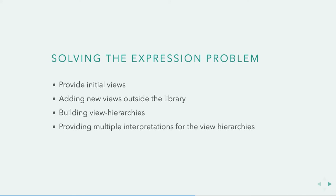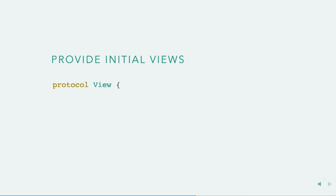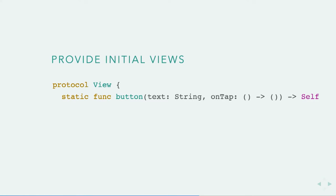In order to convince you that I have a solution, I'm going to show you how to provide the initial views inside the library, how you can add new views from outside the library, how you can build view hierarchies using these primitives, and how you can provide multiple interpretations for those view hierarchies. So we know View is a protocol. But what does it mean to create a button? If View is a protocol, how can we have a more specific view? Well, we could make a static method on the protocol — the parameters are similar to the associated values in the enum case.